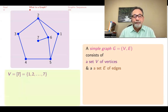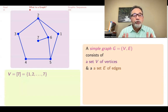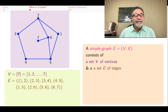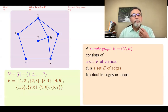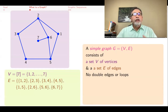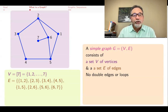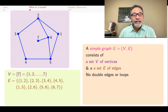In this example, the vertices are the set 1 through 7, which in combinatorics we usually denote by bracket 7. The set of edges are pairs of vertices: {1,2}, {2,3}, {3,4}, {4,5}, {1,5}, {2,6}, {5,6}, {6,7}. When we say a simple graph, we're not allowing any double edges or loops. If we wanted those, we would have a multi-graph or a general graph.